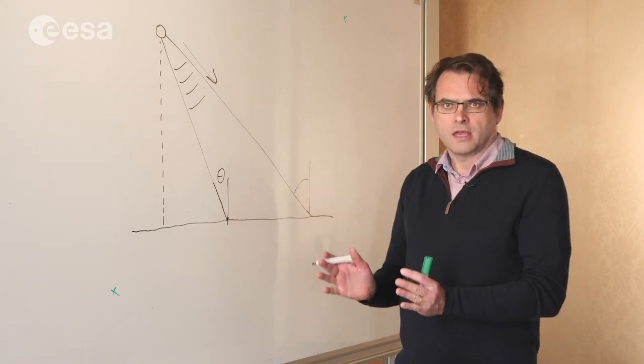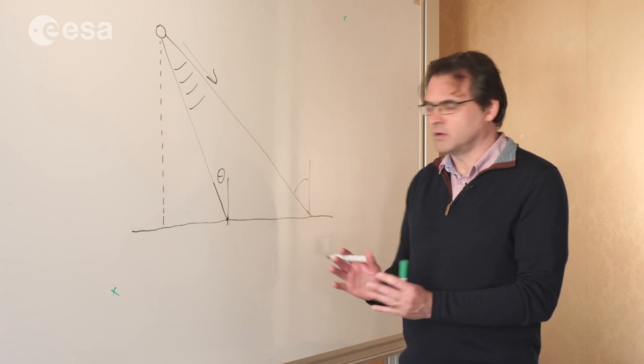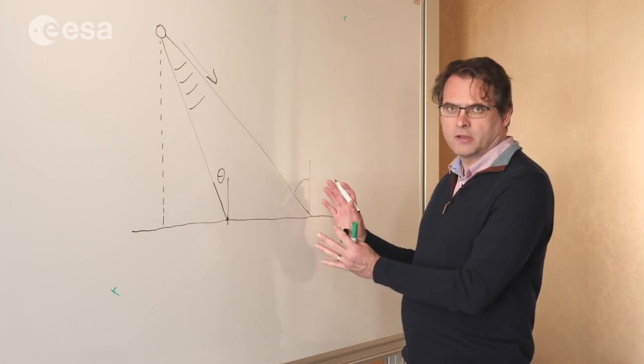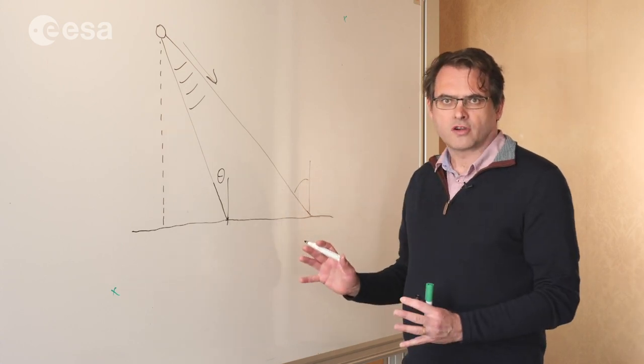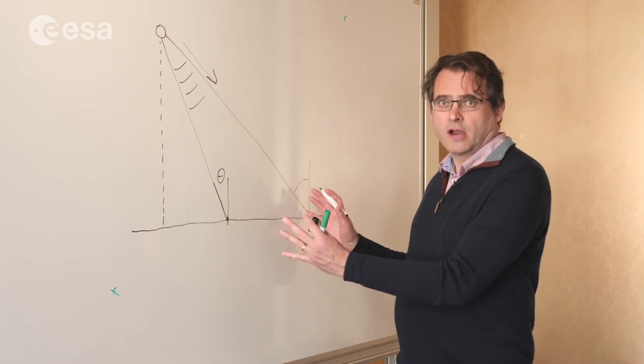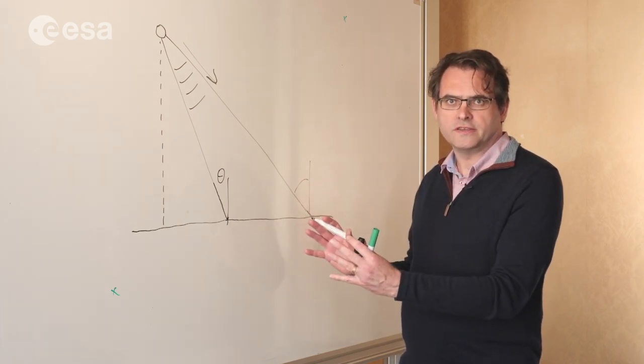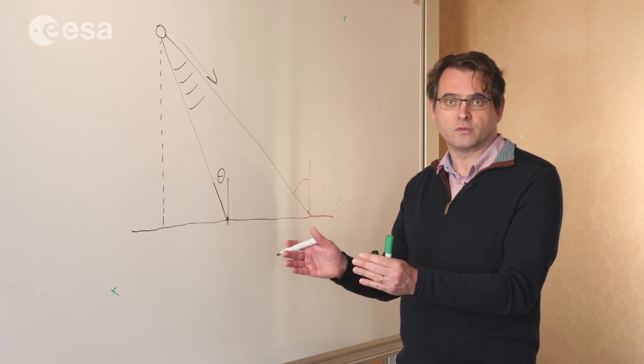At the near swath, the incidence angle might be quite small. At the far swath, it might be quite large. For aircraft systems, there can be quite a range, maybe as much as 20-30 degrees between the near swath and the far swath.